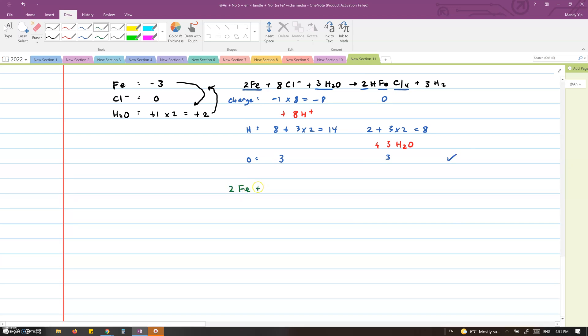So we will end up with 2Fe plus 8Cl minus plus 3H2O plus 8H plus producing 2HFeCl4 plus 3H2 and 3H2O. But we're not done yet. Remember earlier we said that H2Os will be cancelled out? Well, this is indeed what is happening. You can see that we have 3H2Os on both sides of the equation. So we will cancel those out and be left with 2Fe, 8Cl minus and 8H plus reacting to produce 2HFeCl4 and 3H2.